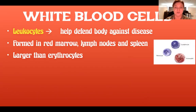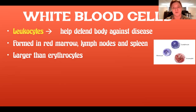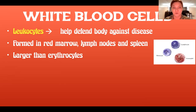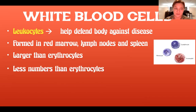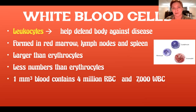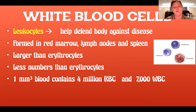White blood cells are called leukocytes. Leukocytes help defend your body against disease. They are also formed in red bone marrow, but some go to other organs to mature, like your lymph nodes and spleen. They are larger than erythrocytes but fewer in number. In a cubic millimeter of blood — about one drop — you'll have 4 million red blood cells and only 7,000 white blood cells.